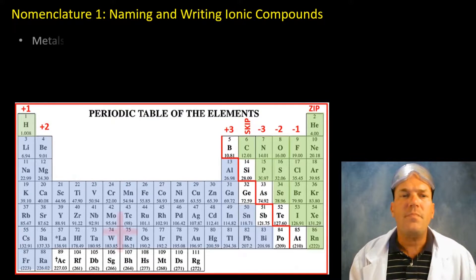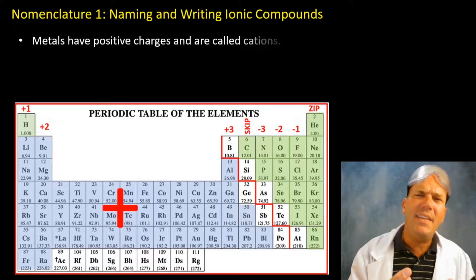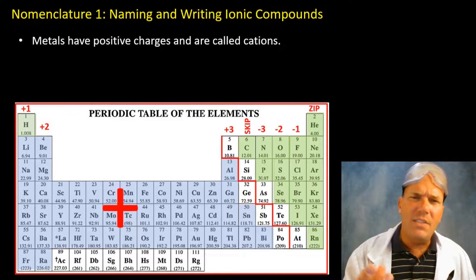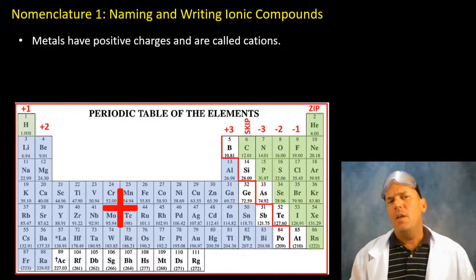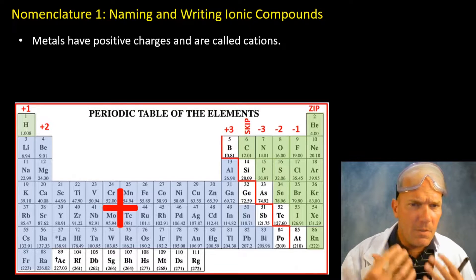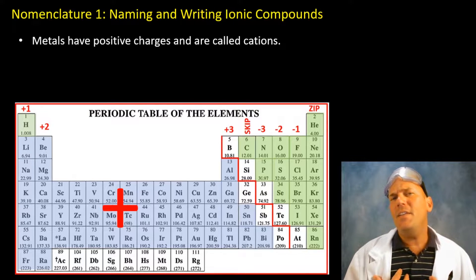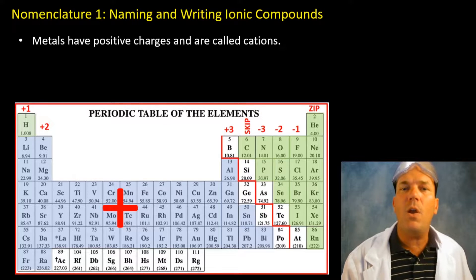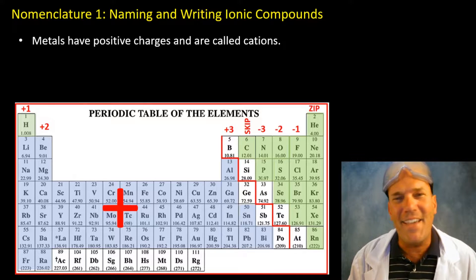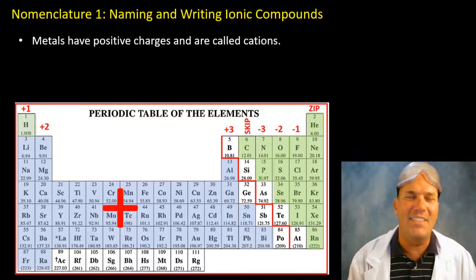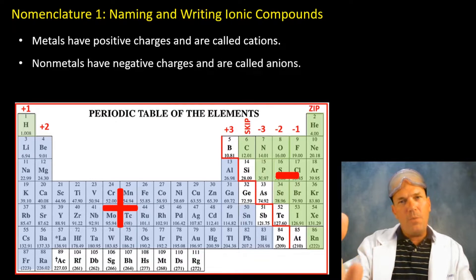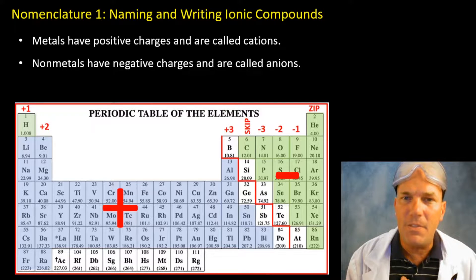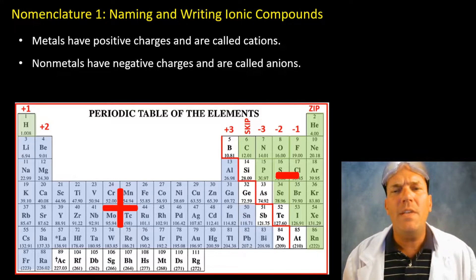Metals, as we've discussed, tend to lose electrons, and when they lose electrons they assume a positive charge — we'll refer to those charged ions as cations. Non-metals tend to accept electrons and become negatively charged — we'll call those anions.